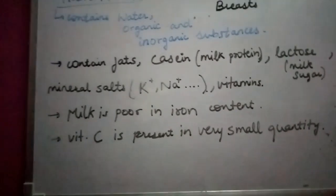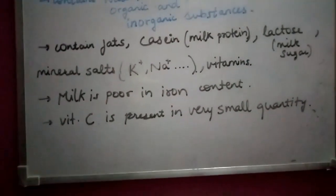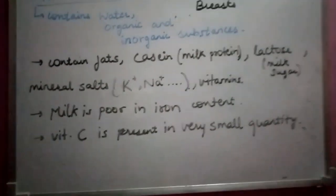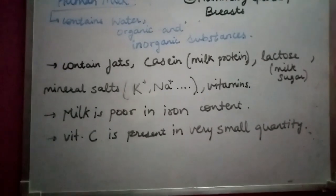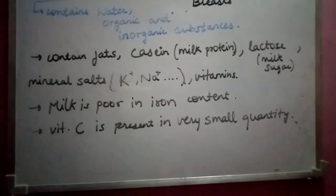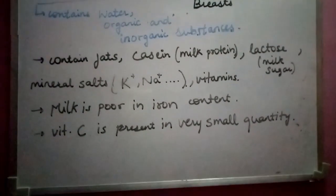This is all about the accessory glands of females. We discussed two types: the vestibular glands and the mammary glands, or breasts.